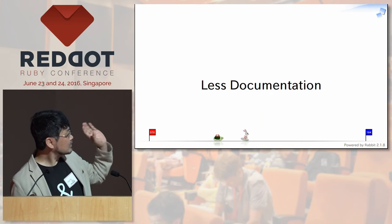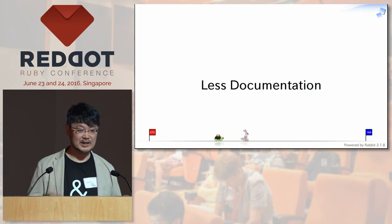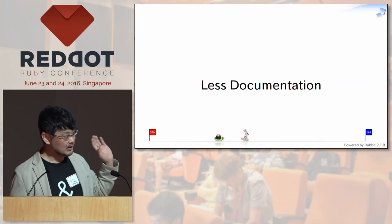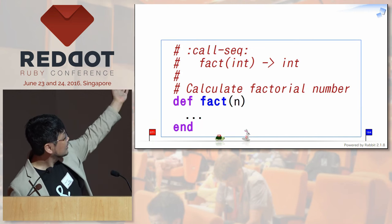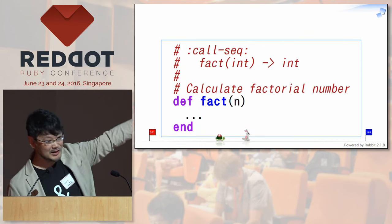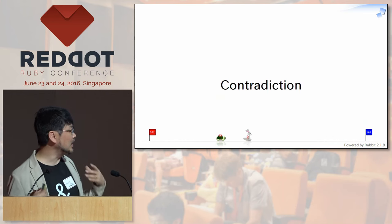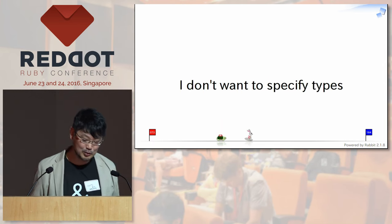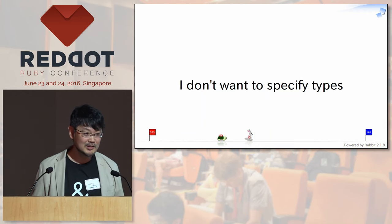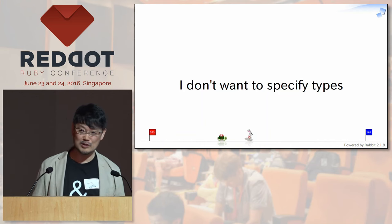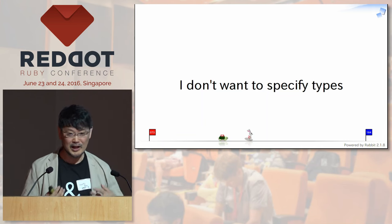Last but not least is documentation. The type system and type descriptions themselves can work as documentation. In Ruby or other dynamic type languages, we often write something like: calculate factorial number, takes integer, returns integer — as a comment. It brings a contradiction. I don't want to specify types, because programs without any type notation just work — so type notation is redundant. Also, by specifying types, we restrict and refuse future flexibility. But when we provide our code to others, we need documentation for users. If we put type information in comments, it's kind of like static typing without enforcement — no type check, no compile-time check. That's the worst of both worlds.